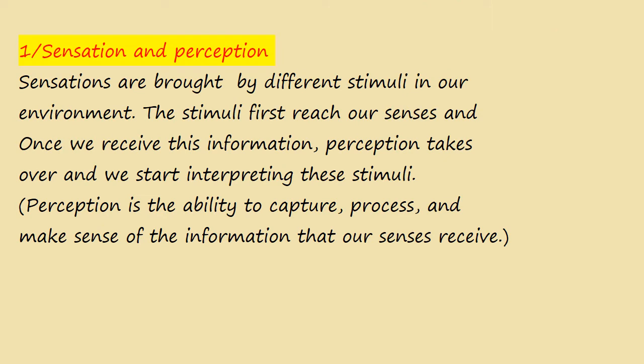The first cognitive process is sensation and perception. Sensations are brought by different stimuli in our environment. The stimuli first reach our senses, and once we receive this information, perception takes over and we start interpreting these stimuli. Perception is the ability to capture, process, and make sense of the information that our senses receive — in other words, we need perception to interpret the information our senses receive from the environment.